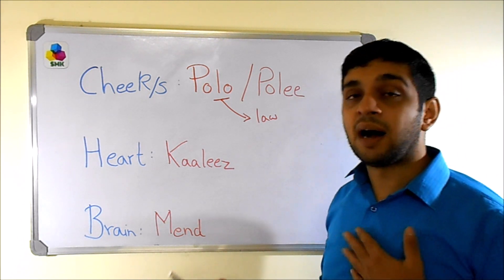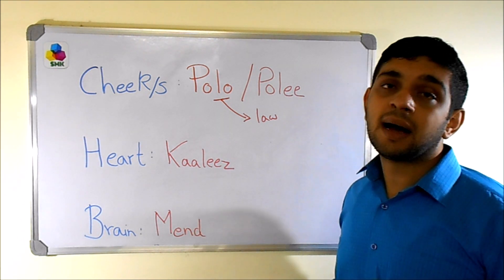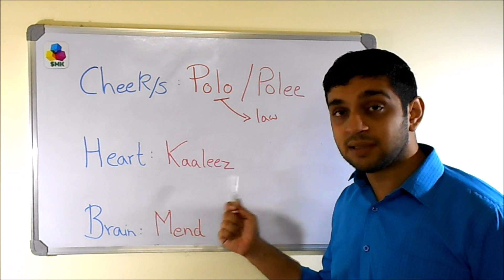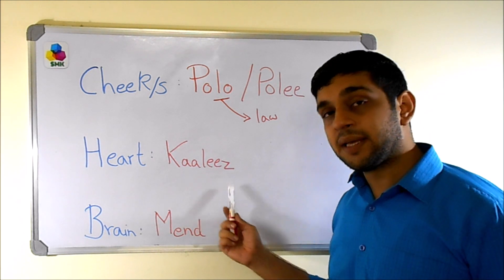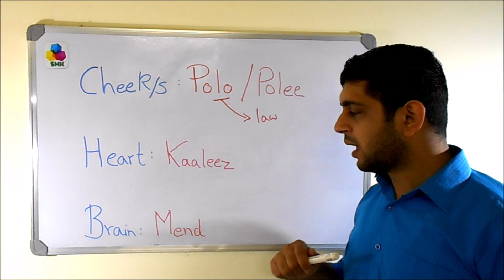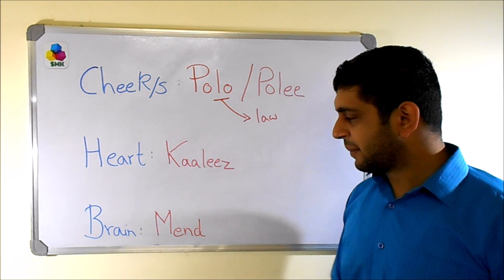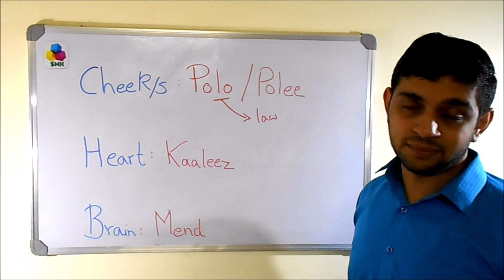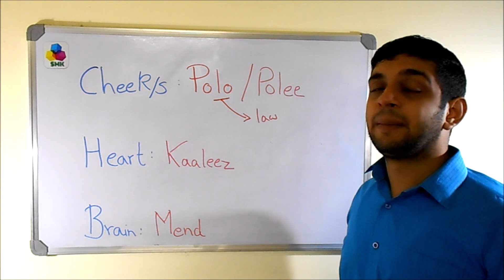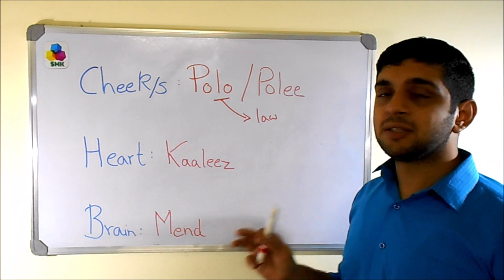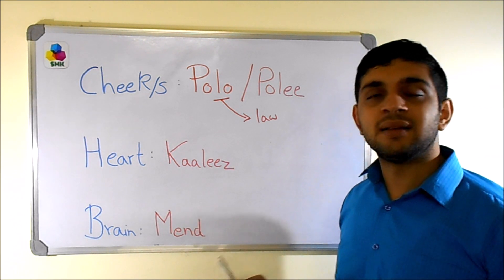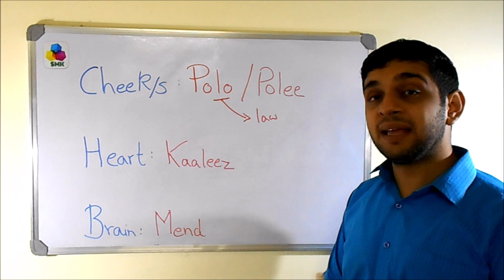Heart is 'karis'. Please take care — it is not 'liser', it is 'ri': karis. Last but not the least, brain is 'mend' — it is not pronounced 'mend' like English, it is 'mend'. To recap: cheek is 'pa-law', cheeks are 'pa-lay', heart is 'karis', and brain is 'mend'.